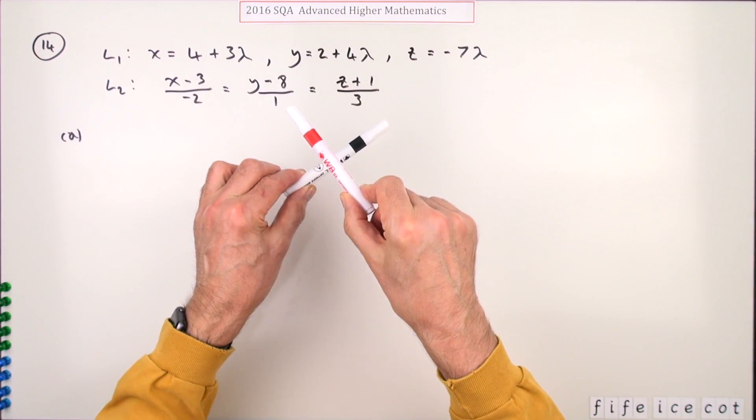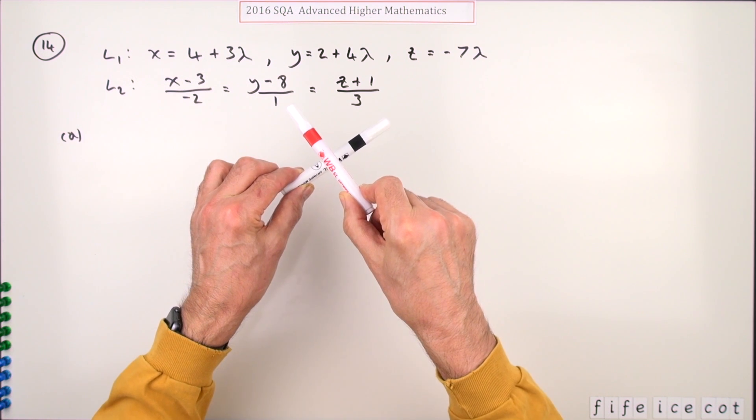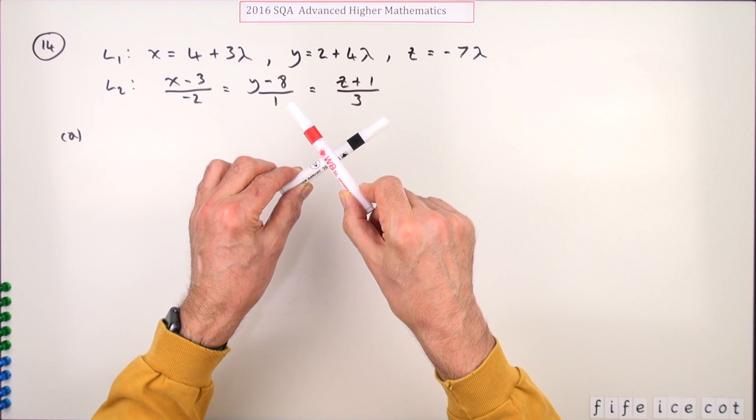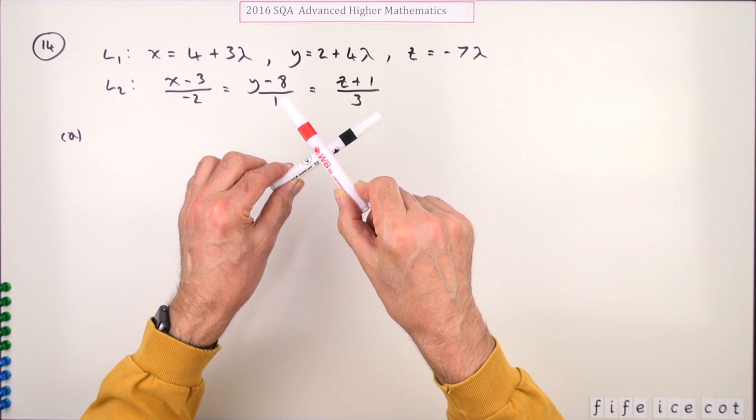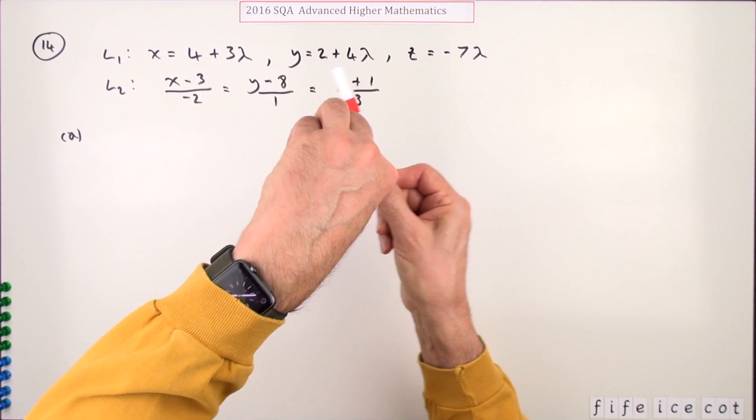However, they will always appear to intersect when projected onto a plane - they'll always share two coordinates. So all you've got to do is find those two coordinates and then check if the third one is the same.